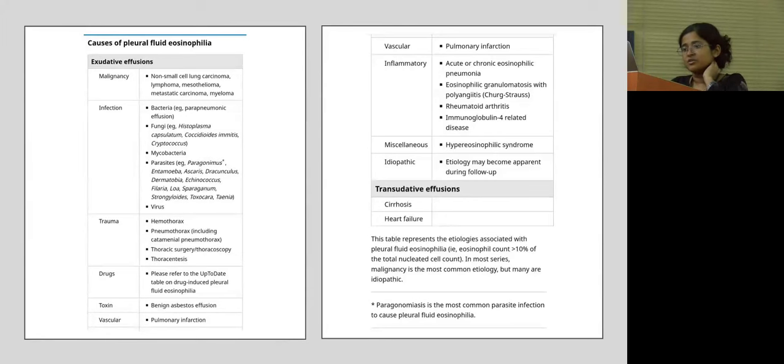Infections such as parapneumonic effusions can also have increased number of eosinophil levels. Fungal infections, parasitic infections have also known to be a feature of increased levels of pleural fluid eosinophils. Mycobacteria per se is known to cause lower levels of eosinophils in the pleural fluid, but there have been case reports stating the contradictory as well.